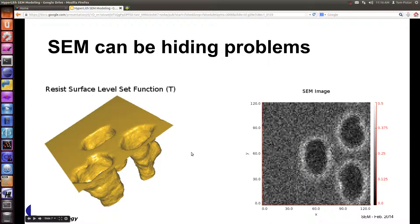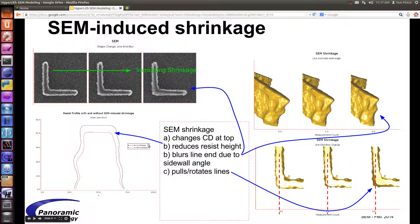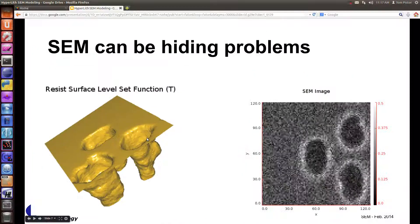Another thing about the SEM is that sometimes it can hide a problem that the resist simulation would show, and vice versa. Here, this contact is not going all the way through, but it's not really evident on the SEM. So if you're doing resist calibration and measuring these contacts, it may not be valid because the SEM is showing you the top.